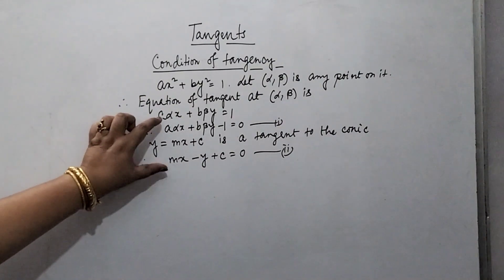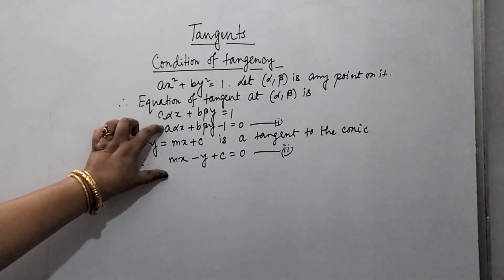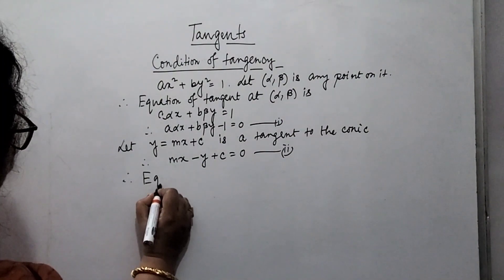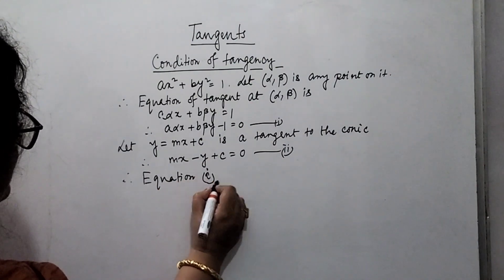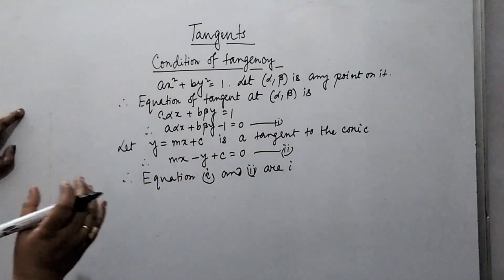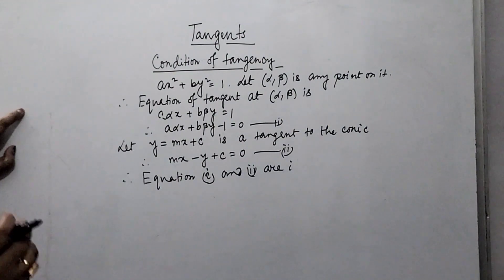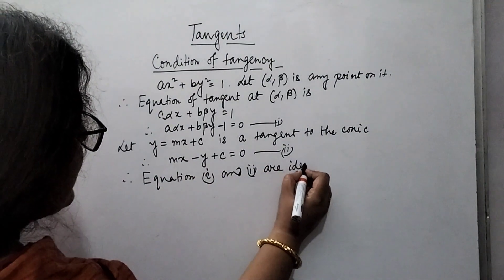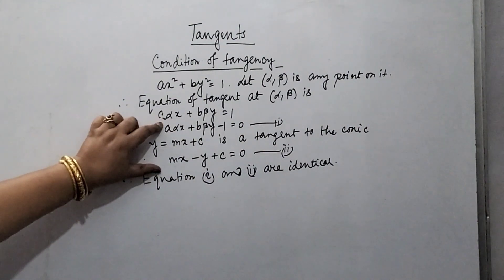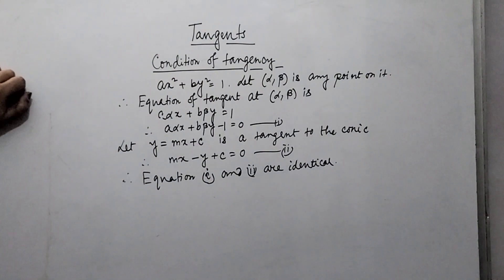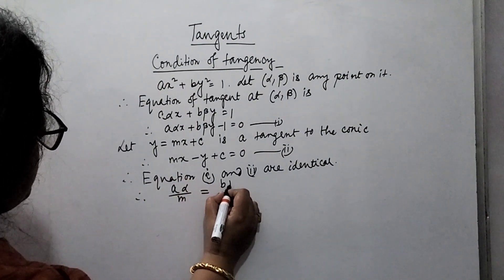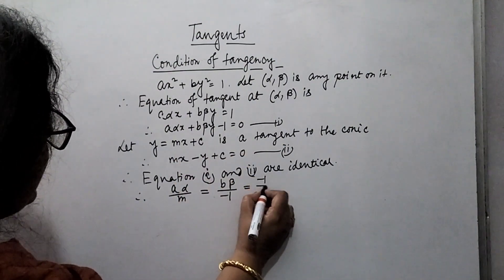As both equations are considered to be the tangent of the same conic, these two equations must be identical. So equations 1 and 2 are identical, and their corresponding coefficients must have equal ratios. Therefore, we can write: a·alpha/m = b·beta/(−1) = (−1)/c. Here, a·alpha is the coefficient of x in equation 1 and m is the coefficient of x in equation 2, and similarly for the other terms.